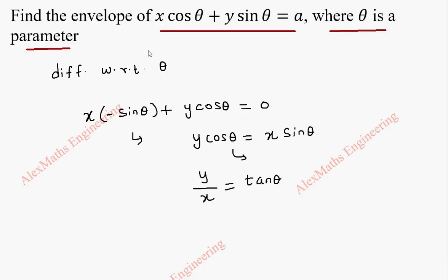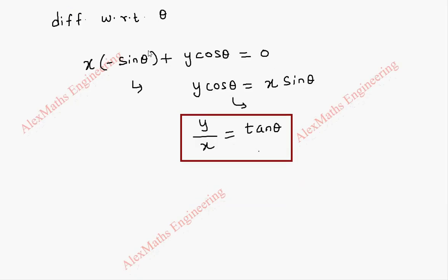Now we have to eliminate θ from the given curve. For that we are going to use this tan θ, and we take a small right triangle in which this is θ. Since tan θ is y over x, we can name this as y and this as x, opposite over adjacent. By Pythagorean theorem, this is root of x squared plus y squared, so I can get the value of sin θ.